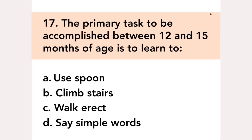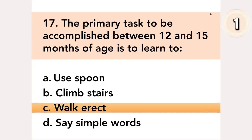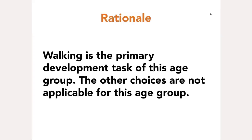The primary task to be accomplished between 12 and 15 months of age is to learn to: A. Use a spoon, B. Climb stairs, C. Walk erect, D. Say simple words. Answer: C. Walk erect. Walking is the primary developmental task of this age group. The other choices are not applicable for this age group.